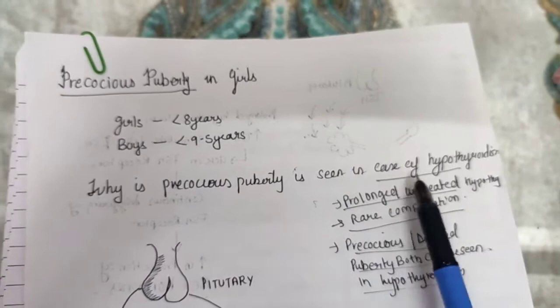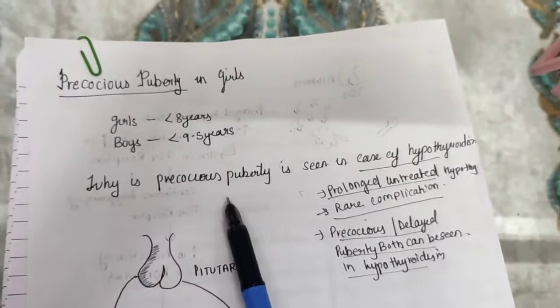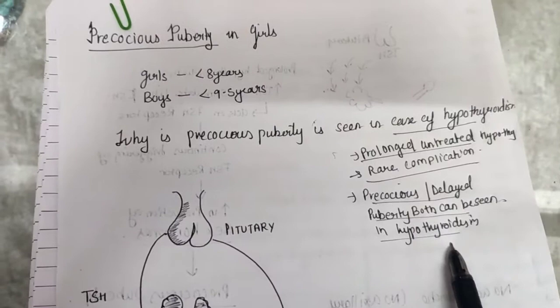There is one important point I want to clarify: precocious puberty and delayed puberty both are associated with hypothyroidism. But precocious puberty is a rare phenomenon. Delayed puberty is more commonly seen in hypothyroidism.